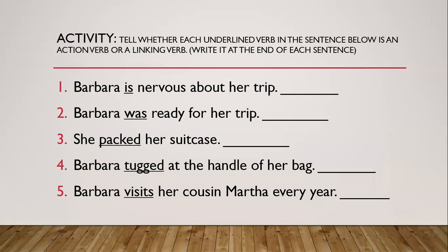Activity. Now identify whether each underlined verb in the sentences below is an action verb or a linking verb, and write it at the end of the sentence. Number one: Barbara is nervous about her trip. 'Is' is underlined, and 'is' is a linking verb.